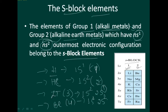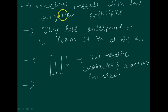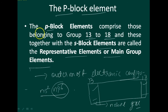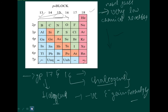Just now you studied about s-block elements — in that, alkali metals and alkaline earth metals come. You have to write the electronic configuration. Some properties of s-block elements: they are reactive metals with low ionization enthalpies; they lose outermost electrons to form 1+ or 2+ ions. Moving down the group, metallic character and reactivity increase. Next, p-block elements are from groups 13 to 18.